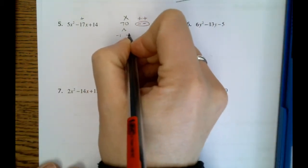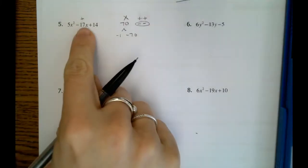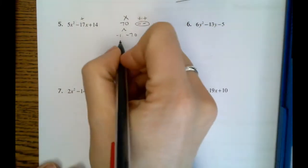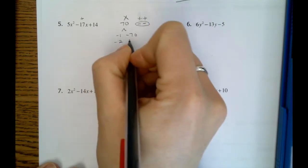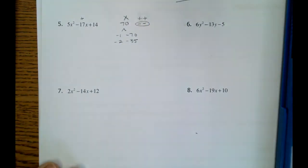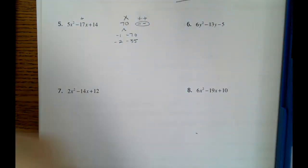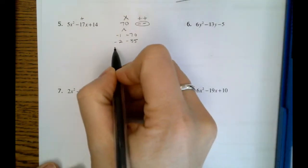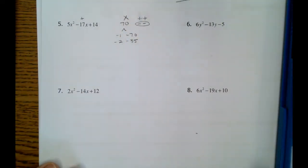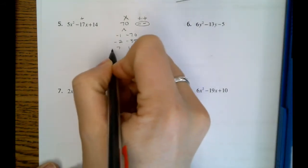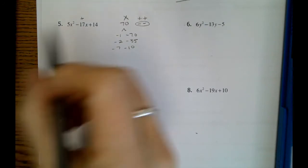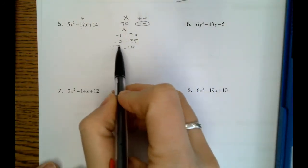Two negatives here. So negative 1, negative 70, those don't add to negative 17. Negative 2 and negative 35, those do not add to 17. Let's see, 70 divided by 3, nope, that won't be nice. Oh, 7 and 10. Negative 7, negative 10, those will add to negative 17.